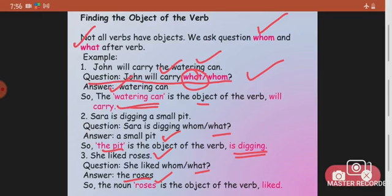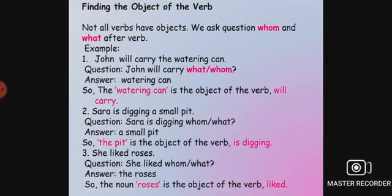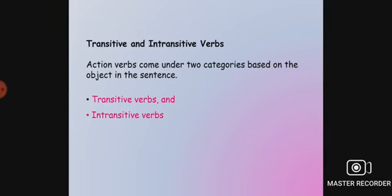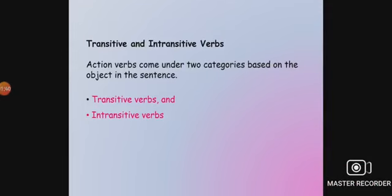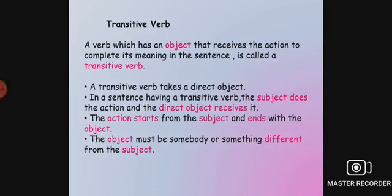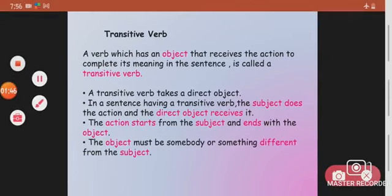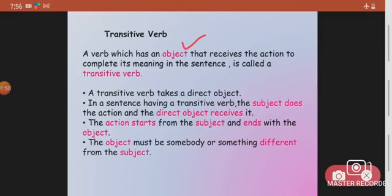There are two types of action verbs: transitive verbs and intransitive verbs. We'll start with transitive verbs. A transitive verb is a verb that has an object which receives the action to complete its meaning in the sentence.